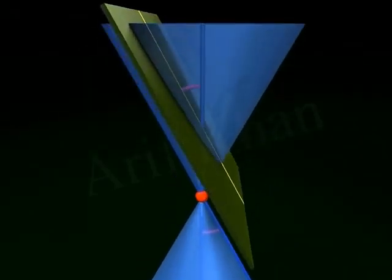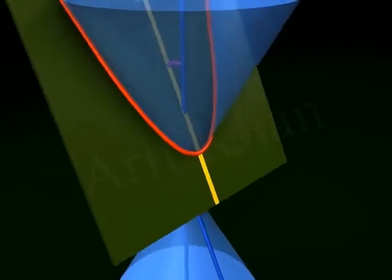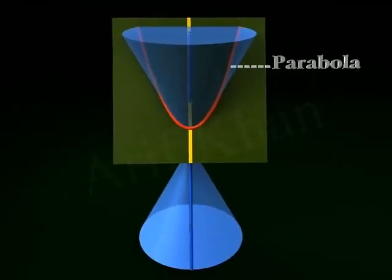Parabola. When the angle made by the plane to the vertical axis is exactly equal to the vertex angle, we get an open curve called a parabola at the intersecting surface of the cone.